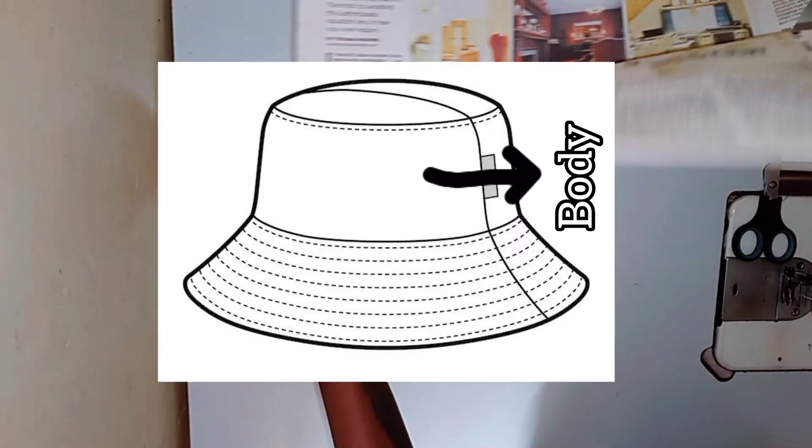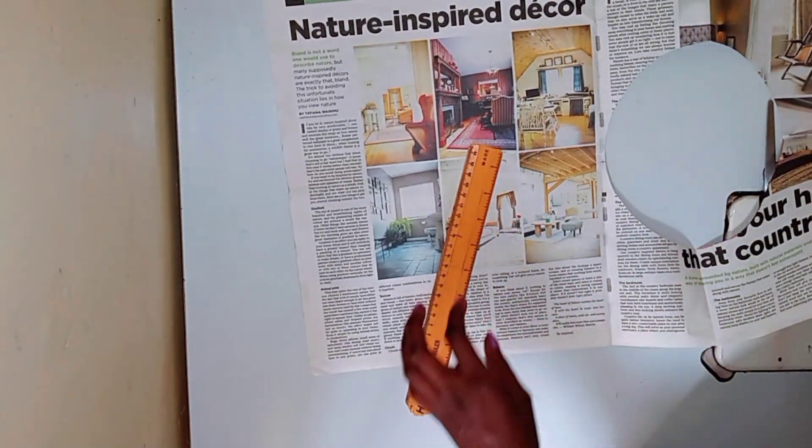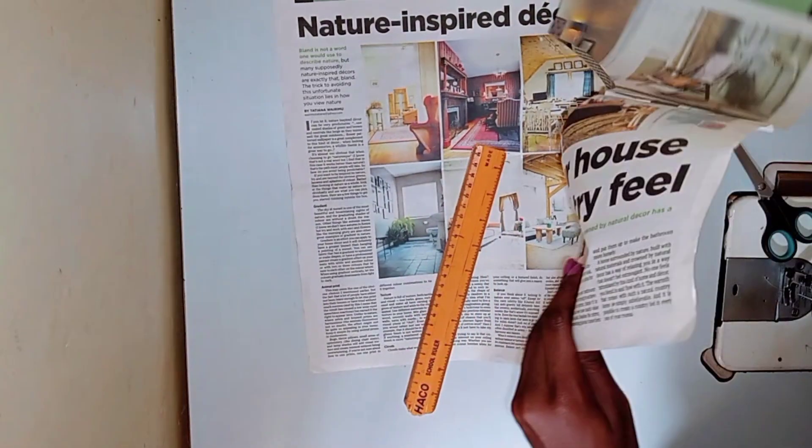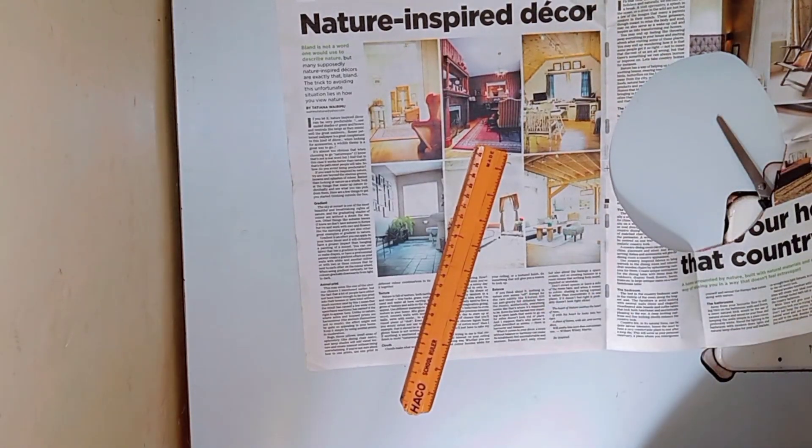This other part is called the body or the sideband, and this is the part of the hat that wraps around your head. So that's what we're going to create for now. Prepare your newspaper or pattern paper and let's do this.